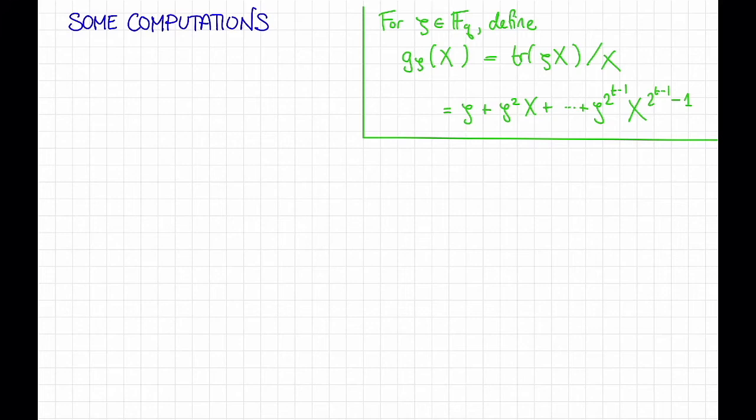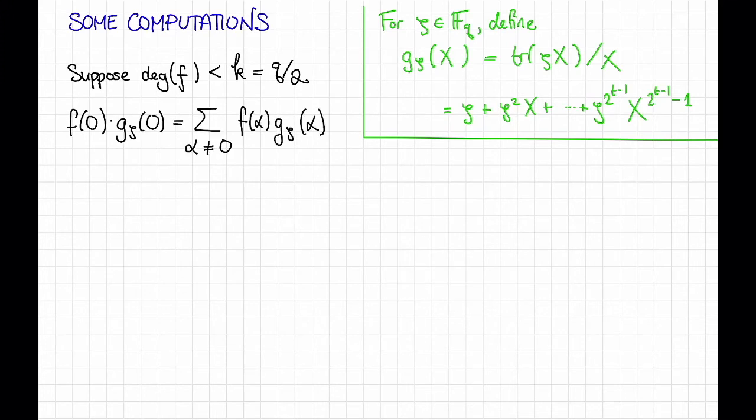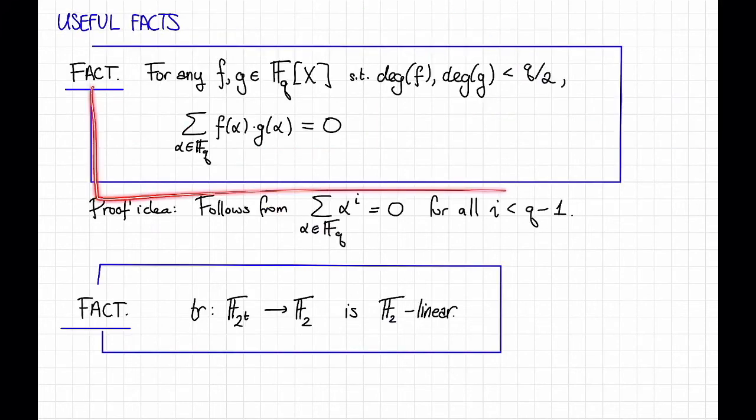But meanwhile, let's suppose that f has degree strictly less than q over 2. And let's remember that in this example, q over 2 is equal to k, the dimension of the Reed-Solomon code. Therefore, f is a legitimate polynomial that might be a message in our Reed-Solomon code. Then, I claim that f of 0 times g zeta of 0 is equal to the sum of all alpha in fq f of alpha times g zeta of alpha. That follows from our first useful fact back here.